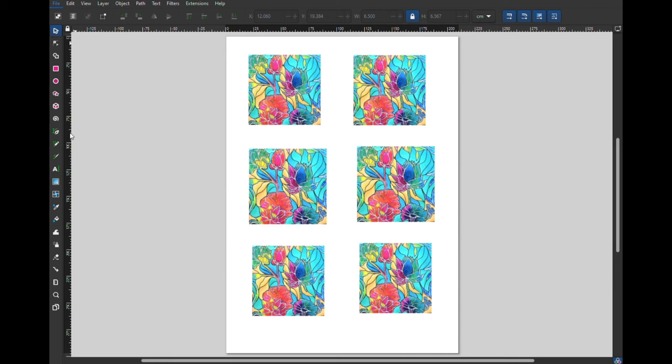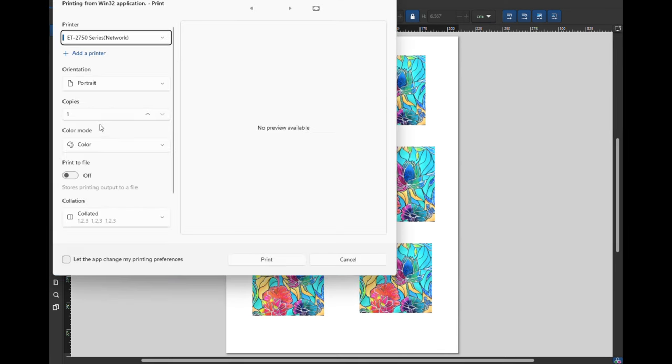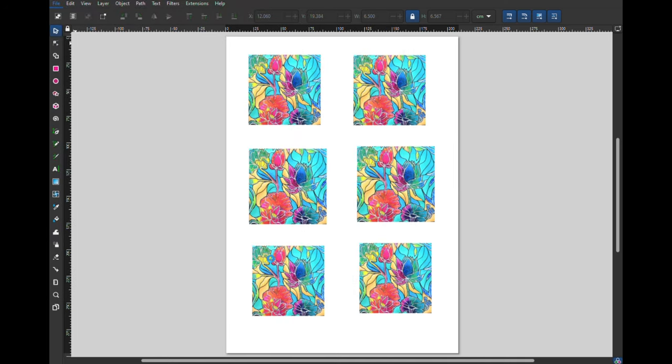I'll go to File and Print and that's where you'll pick your printer. I want to sublimate so I will pick my sublimation printer. I don't see anything, there's no preview. I see nothing. I just press print.